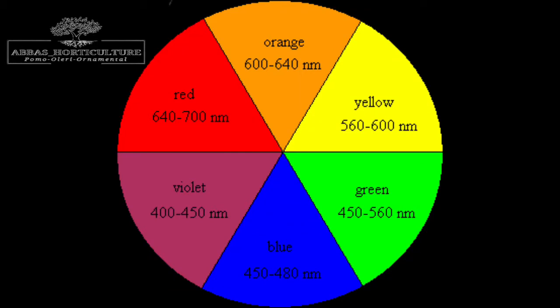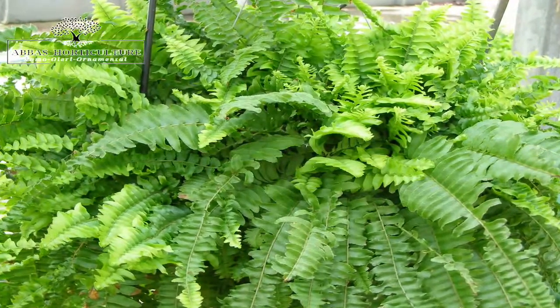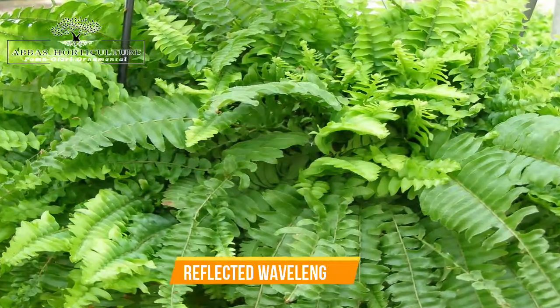Light which can be seen by the human eye is made up of a rainbow of colors stretching from purple through to red. Objects are perceived by humans as colored when the object reflects light back to our eyes. All the other visible wavelengths of light are absorbed, and we only see the reflected wavelength.